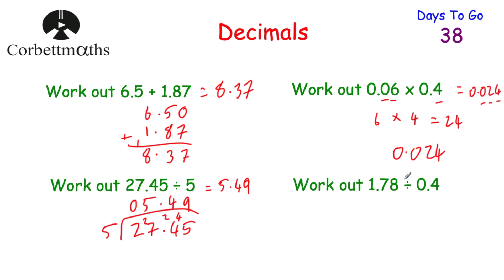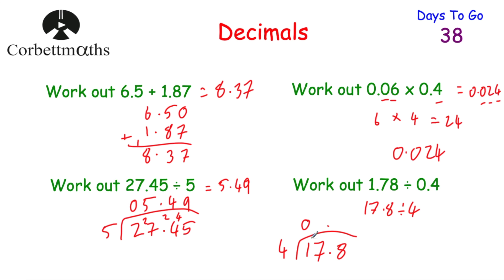Finally, 1.78 divided by 0.4. Multiply both numbers by 10 to get 17.8 divided by 4. How many 4s go into 1? Zero remainder 1. Into 17? Four remainder 1. Into 18? Four remainder 2. Into 20? Five. So the answer is 4.45.